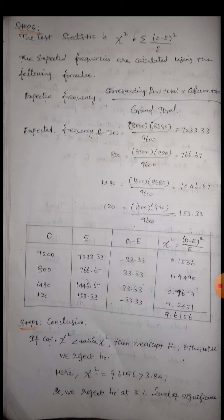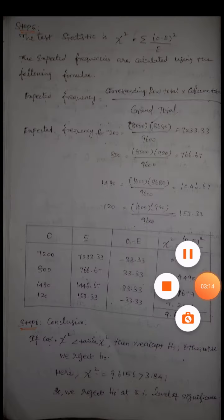Step six — conclusion. The calculated chi-square value is 9.6156, while the table value is 3.84. Since the calculated value is greater than the table value, we reject the null hypothesis H0 at the 5 percent level of significance. Thank you.